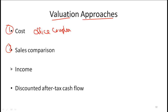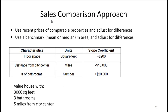Next we have the sales comparison method, then the income method, and the discounted after-tax cash flow method. Starting with the sales comparison approach: we use recent prices of comparable properties and then use that as a basis for estimating our target property. If there are differences between our target property and the comparables, then we need to make adjustments. Or we can use a benchmark — essentially a mean or median in the area — and then adjust for differences. If our target property is representative of the benchmark, that's the value; if it is somewhat different, then we adjust for the differences.